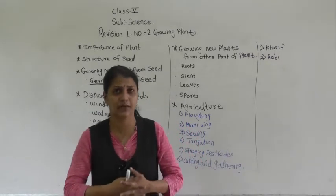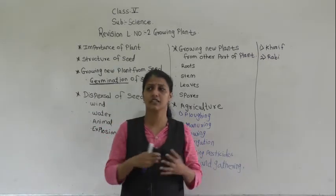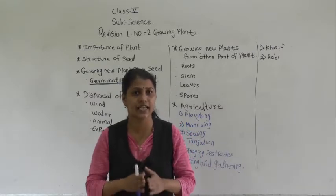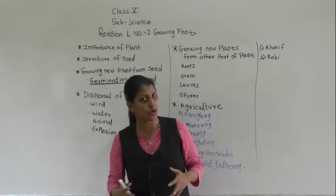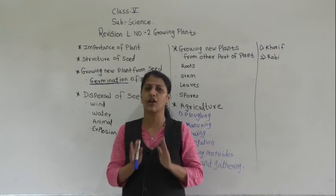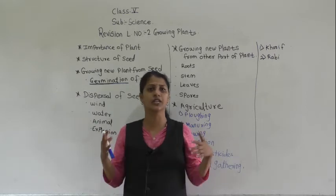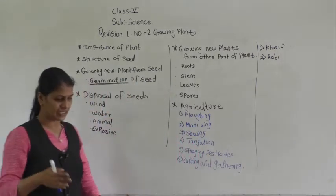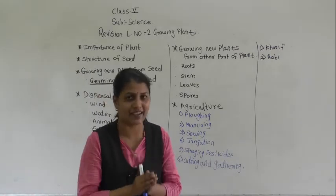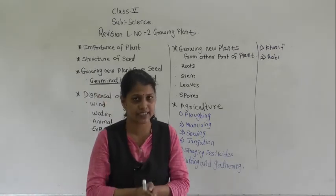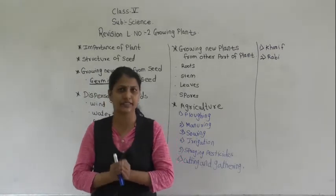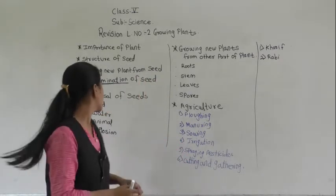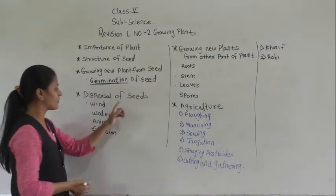Many types of seeds are spread on the ground, but not all seeds can grow into new plants. The scattering of seeds from the mother plant is called dispersion — that is called dispersion of the seed.